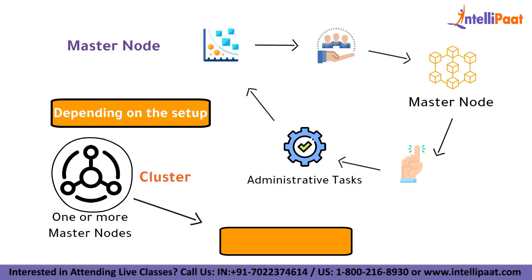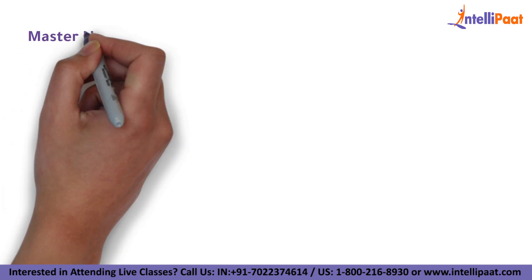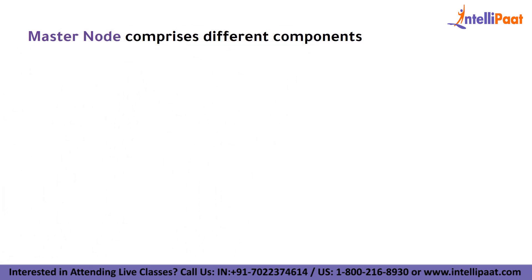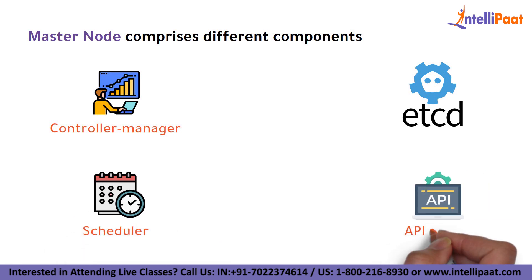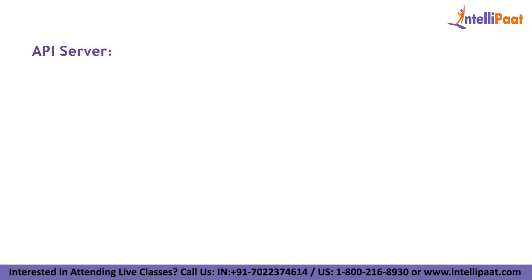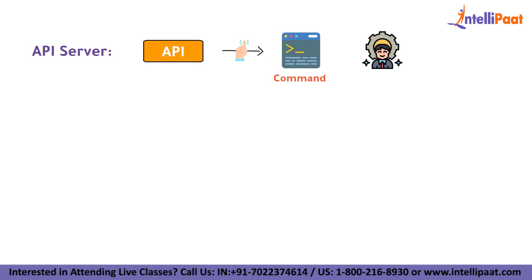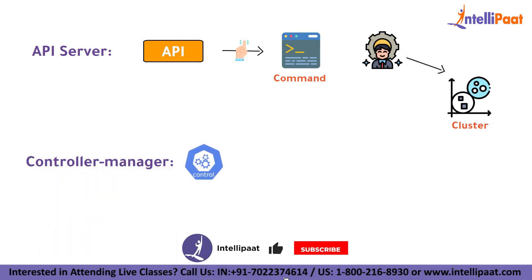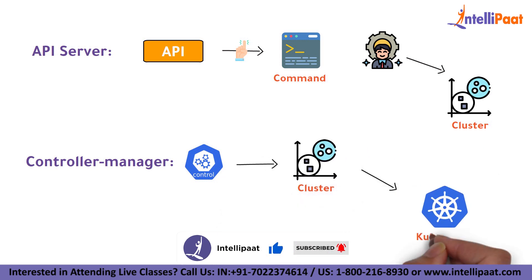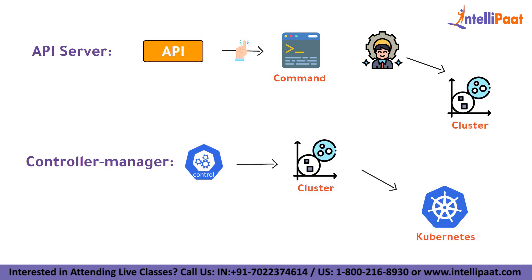This is done to keep an eye on failure tolerance. The master node comprises different components such as control manager, etcd, scheduler, and API server. The API server is the first point of contact for all REST commands used to manage and manipulate the cluster. The control manager is a daemon responsible for regulating the cluster in Kubernetes, and it also manages various non-terminating control loops.